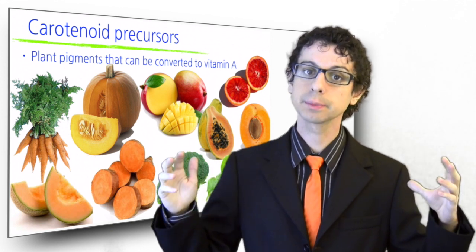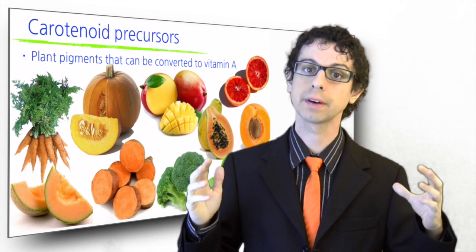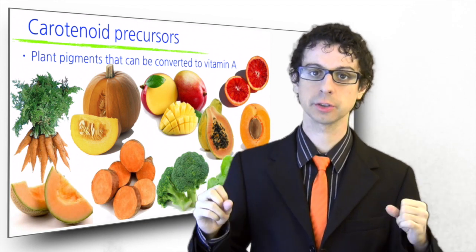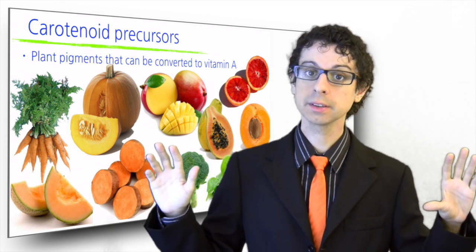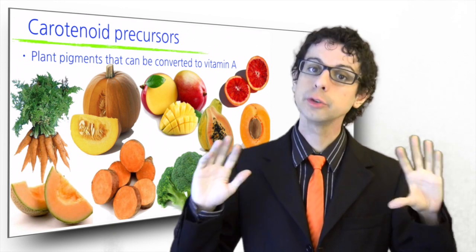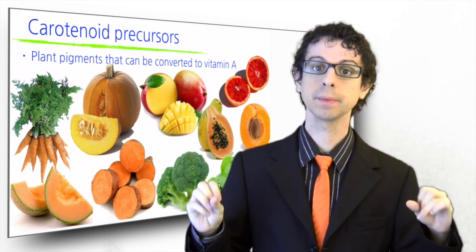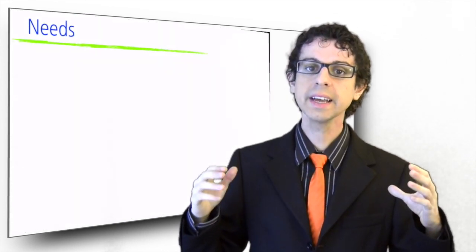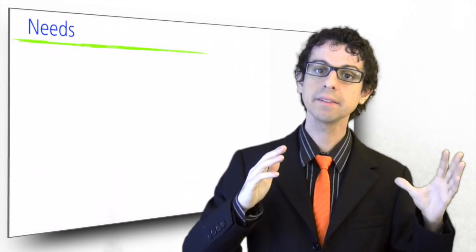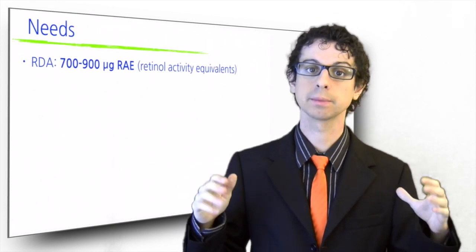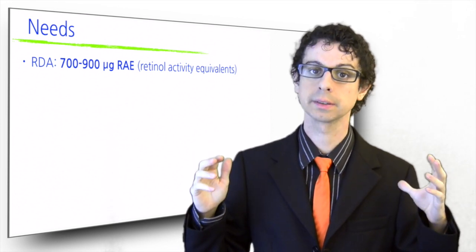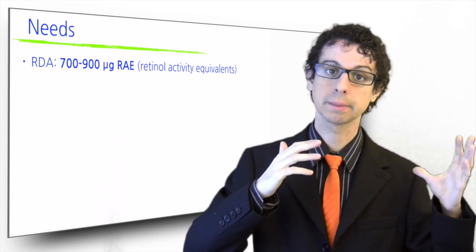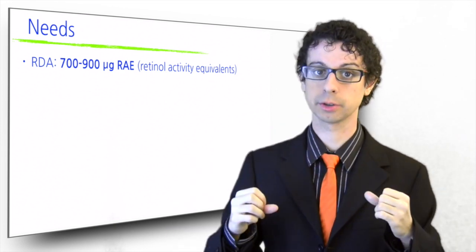Alpha-carotene and beta-cryptoxanthine also have some pro-vitamin A activity, although their conversion is much less efficient. All the other carotenoids, there are about 600 of them, do not have any pro-vitamin activity, but they have other health-promoting functions in our body. The RDA for vitamin A is between 700 and 900 micrograms of retinol activity equivalents. This unit of measure takes into account the contribution of both preformed vitamin A and its carotenoid precursors.